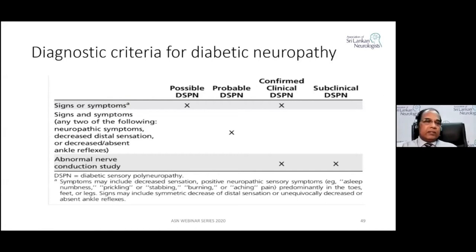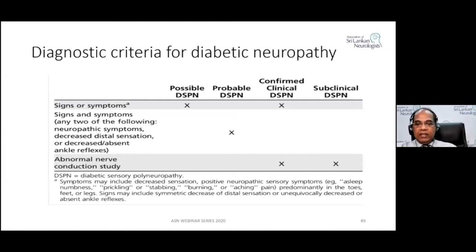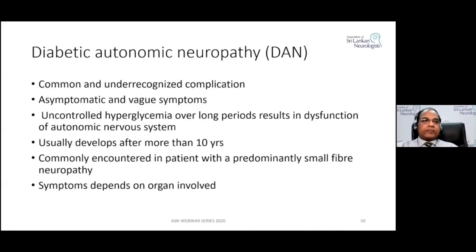These are the diagnostic criteria for diabetic neuropathy. If you have symptoms or signs of diabetes alone, it is 'possible' diabetic DSPN. If you have both signs and symptoms, it is 'probable' DSPN. Signs, symptoms, plus abnormal nerve conduction constitute 'confirmed' clinical DSPN. If only nerve conduction is abnormal with no symptoms or signs, it is 'subclinical' DSPN.